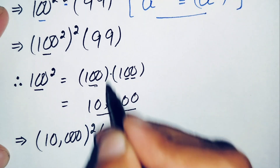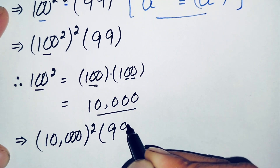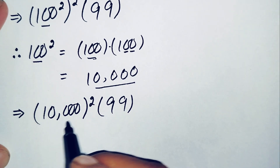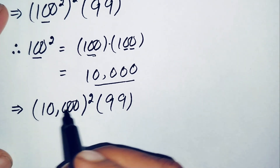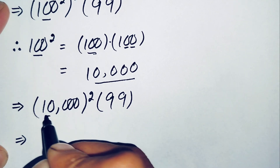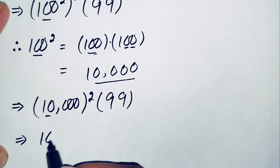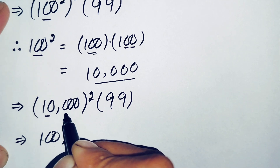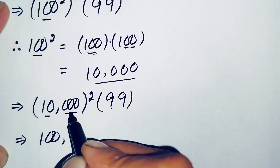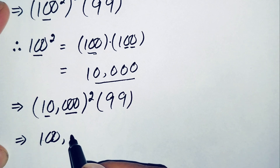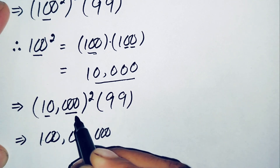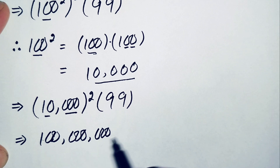Next we find the value of 10,000 squared. The square of 10 is 100, and there are three zeros whose exponent doubles to six zeros, so the value of 10,000 squared is 100 million. Our expression is now 100 million times 99.